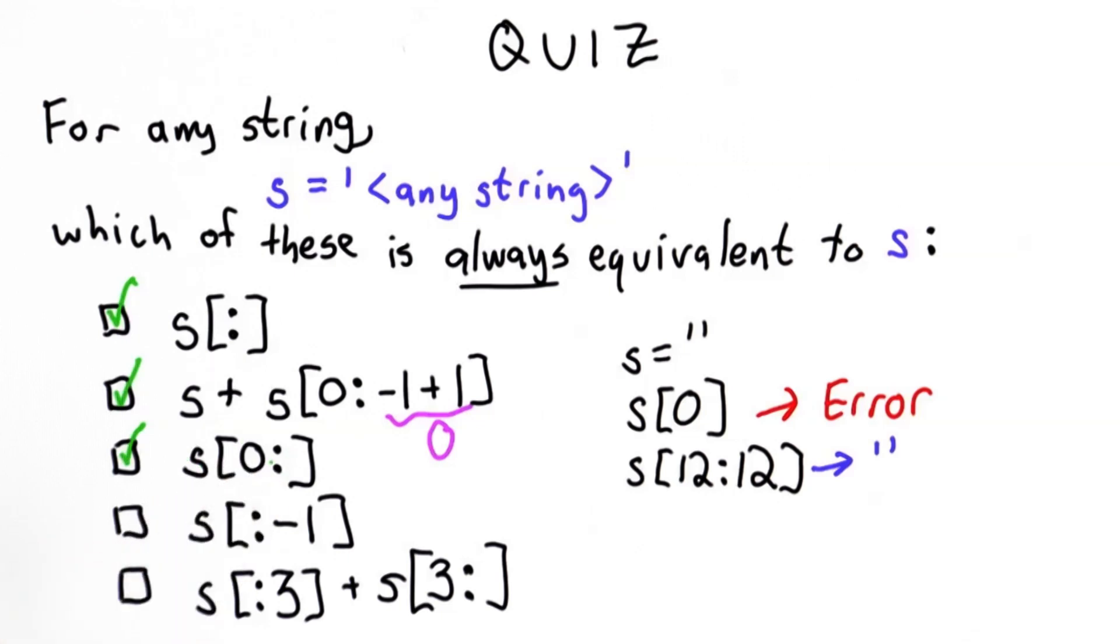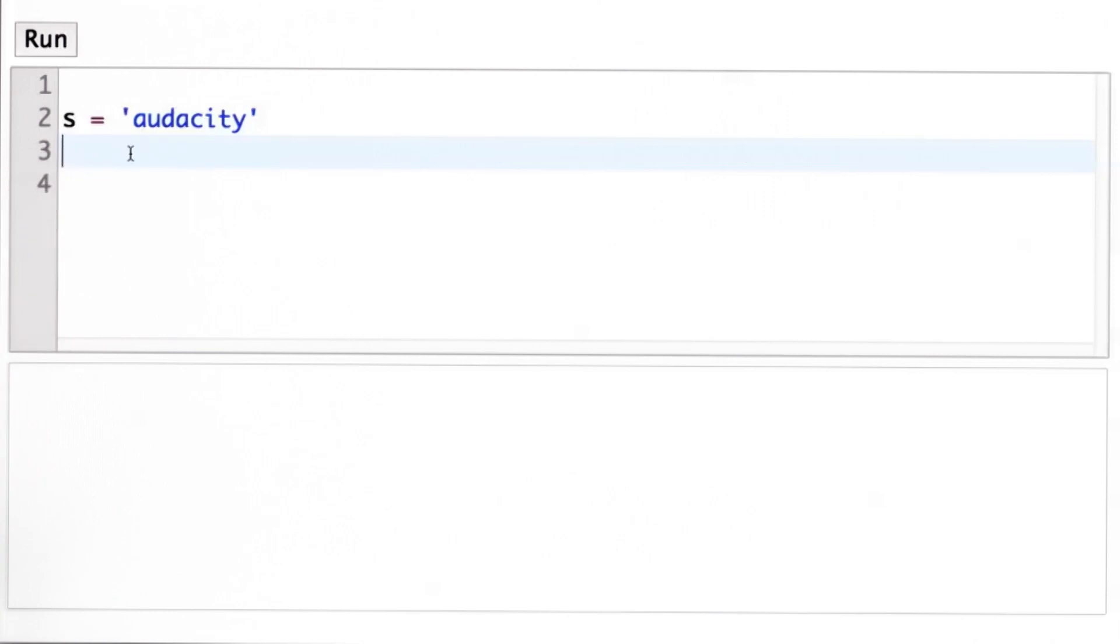The fourth one is not equivalent, and this might be a little surprising. It sounds like it's selecting all the characters from the beginning to the end, because -1 is the index of the last character in s. But remember that the selection stops before the last character. So what this will do is give us every character besides the last one. Let's see that in the Python interpreter.